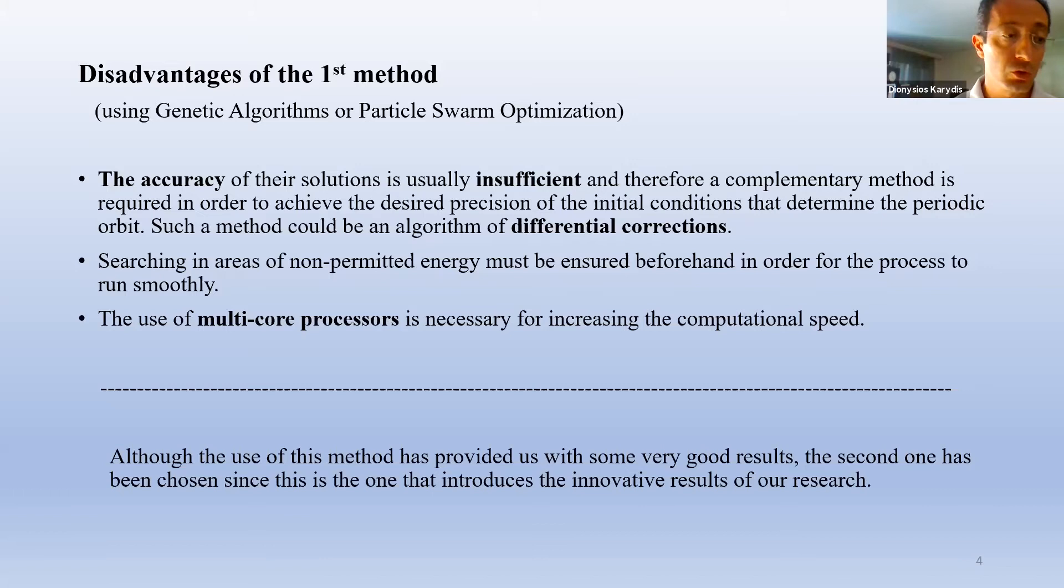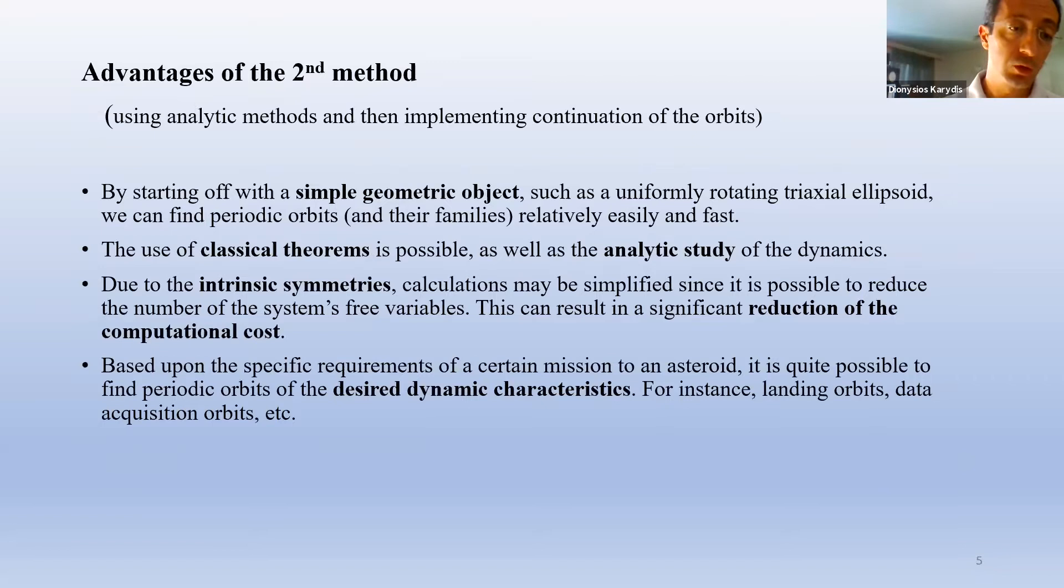The advantages of the second method that is the one using analytic methods and then implementing continuation of the orbits are the following. Starting with a simple geometric object, we can find periodic orbits and their families relatively easy and fast. The use of classical theorems is possible as well as the analytic study of the dynamics. Due to the intrinsic symmetries, calculations may be simplified since it is possible to reduce the number of the system's free variables. This can result in a significant reduction of the computational cost.